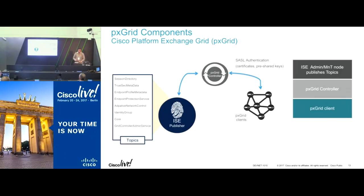PXGrid is a messaging framework that provides flexible APIs to consume information. It can be a real-time event notification, a directed peer-to-peer query, or a bulk transfer of information out of band. How we do this securely is what PXGrid is pursuing, basically.